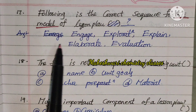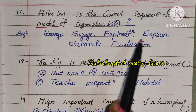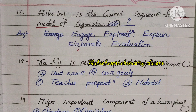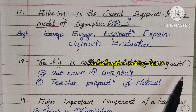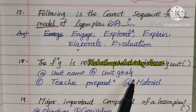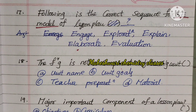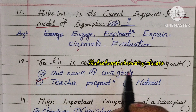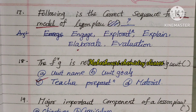To confirm the 5E model of lesson plan: first is Engage, second is Exploration, third is Explain, fourth is Elaborate, fifth is Evaluation. Eighteenth question: Which of the following is not a component of teaching unit — Unit name, Unit goals, Teacher preparation, or Material required? Direct answer is C — Teacher preparation is not a component of the teaching unit.